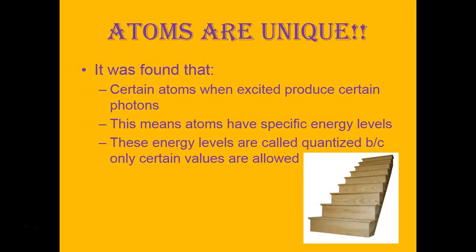To help think about what quantized means, I use the example of eggs. If you go to the supermarket and buy eggs, there are only certain amounts you're allowed to buy — six, twelve, or eighteen. You can't go and say 'I want two eggs.' You have to buy them in sixes. So eggs are quantized into groups of six. You buy six or twelve or eighteen, but you can't buy anything in between.